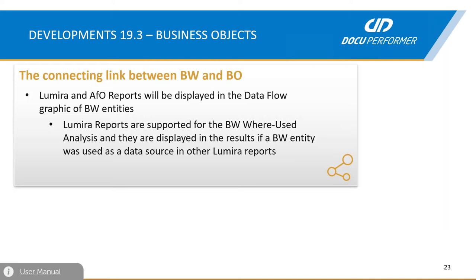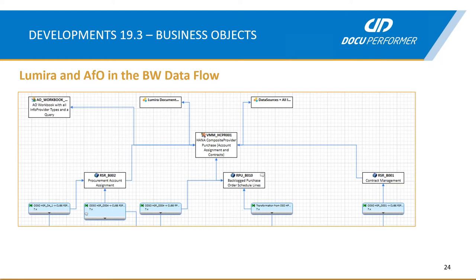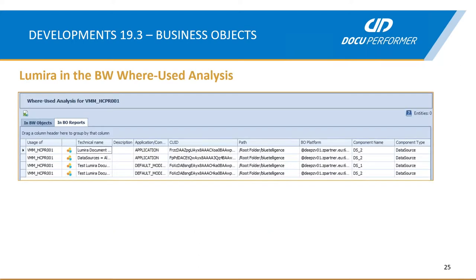We made the connection between our BW and BO component even better. From now on, if you are analyzing data flows for a certain BW object, you will see the dependent AFO reports or Lumira reports on top of their queries. This will give you a complete picture across the components. Here is, for example, the data flow of a composite provider — on the top layer you can see an Analysis Office workbook and two Lumira documents which are depending on this composite provider. This is also working for queries, and here is an example result list of a where-used analysis of a query in BW reports.